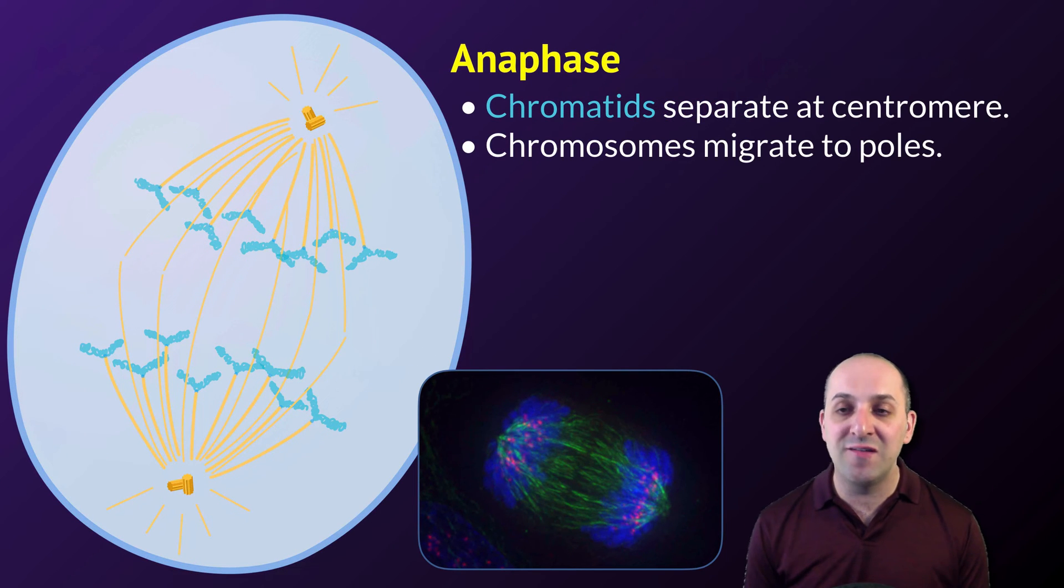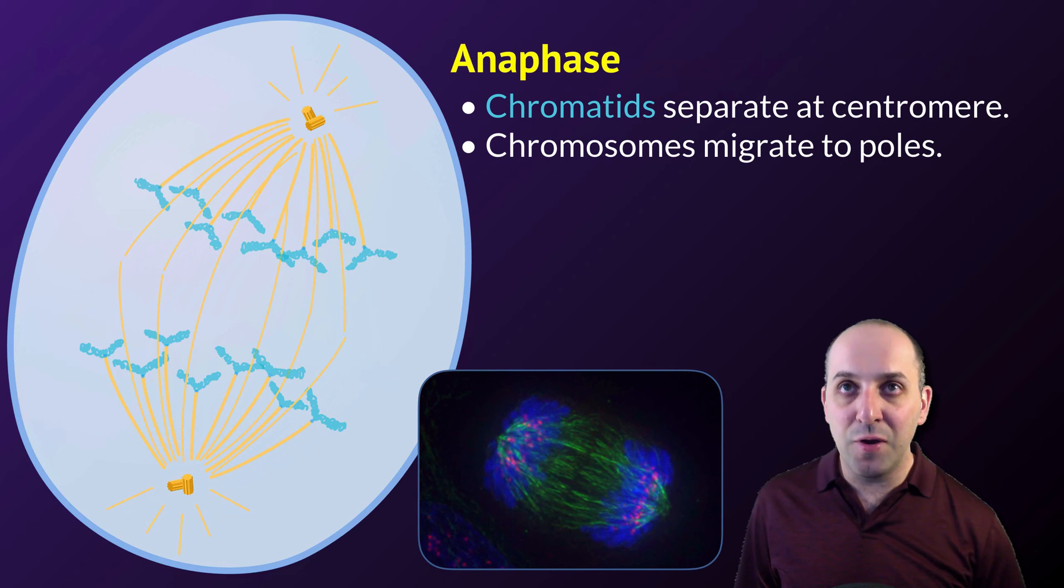During anaphase, the sister chromatids separate at the centromeres, and they begin to migrate to the poles of the cell. Once anaphase is completed, each pole of the cell will have one copy of each of the chromosomes in the cell.